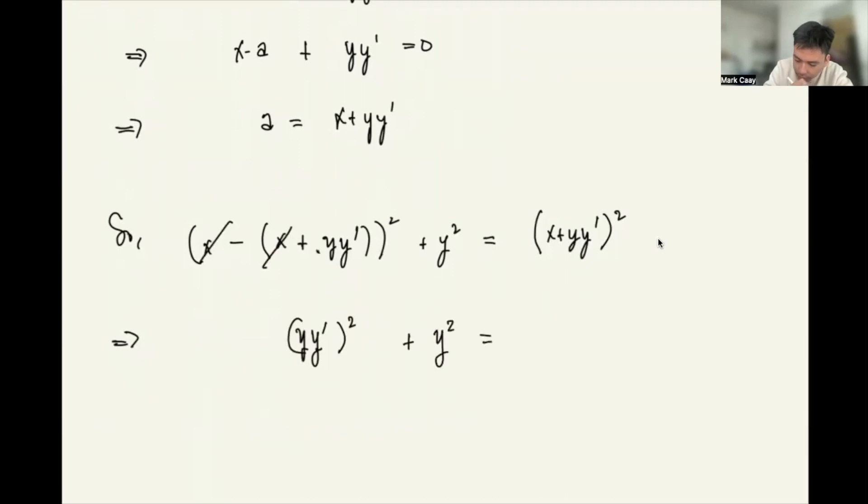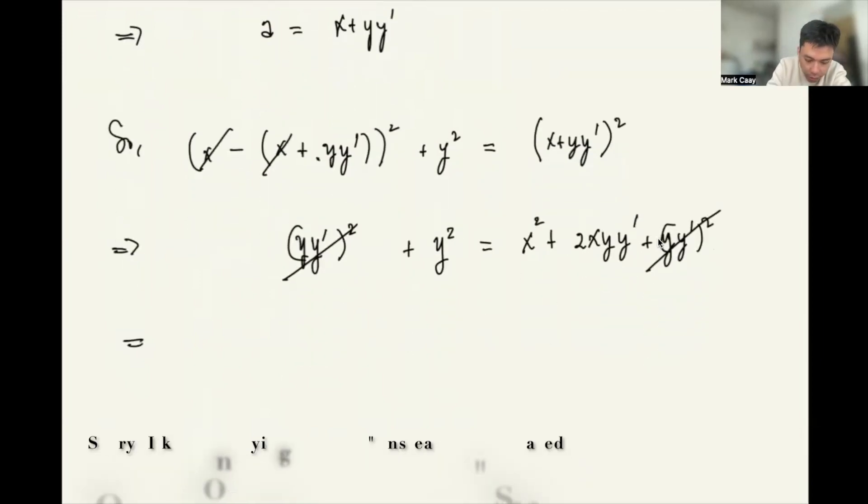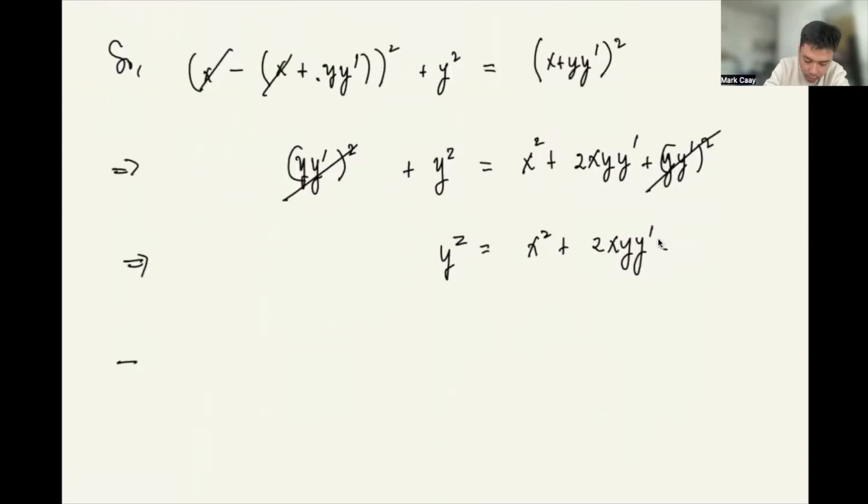This becomes negative but when squared it's positive. That equals x squared plus 2xy y prime plus y y prime squared. And so this will be canceled. So therefore, y squared